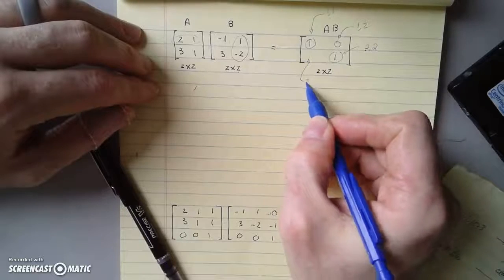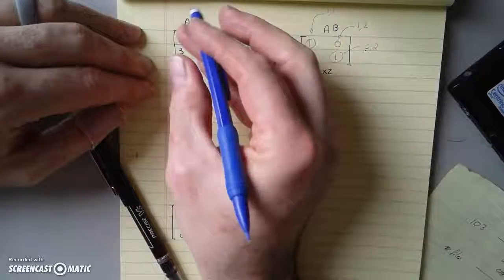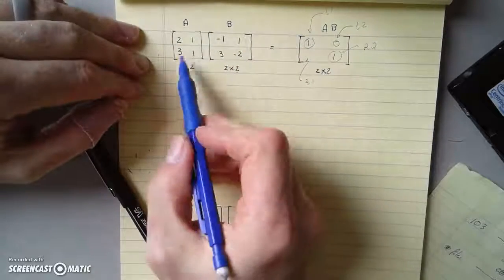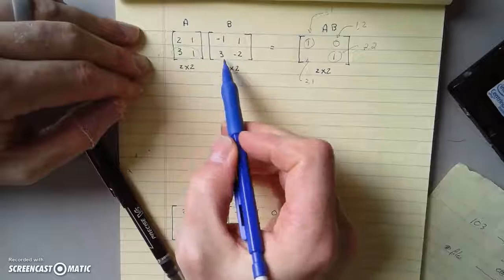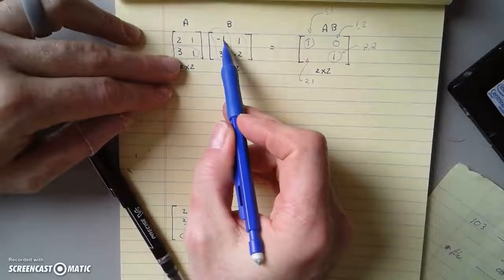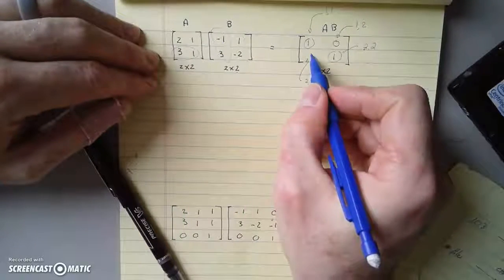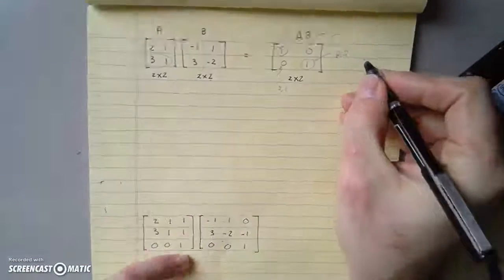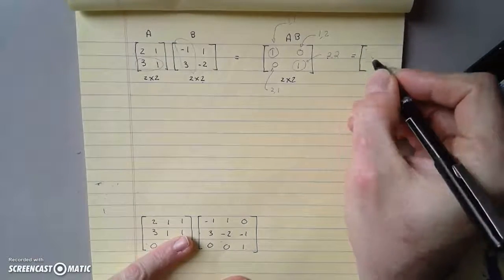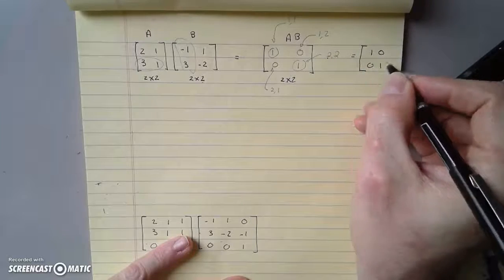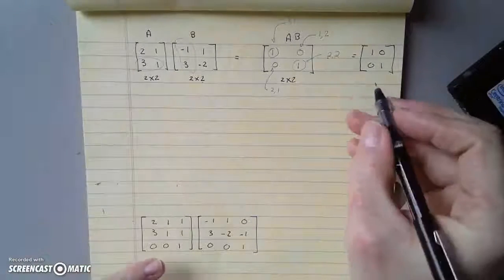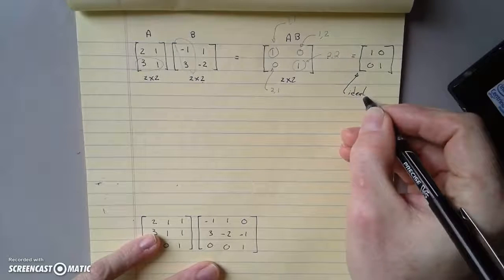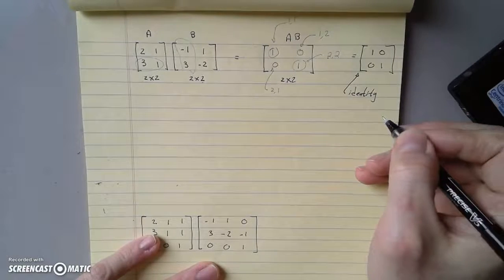This is second row, first column. So second row, first column, that's negative 3 plus 3 is 0. So the answer is then 1, 0, 0, 1. And this is a special matrix. This is the identity matrix.